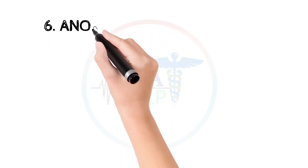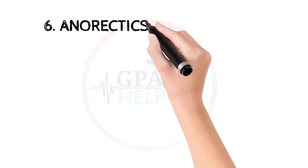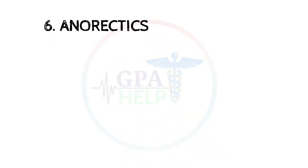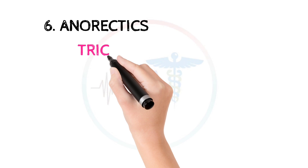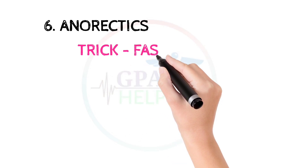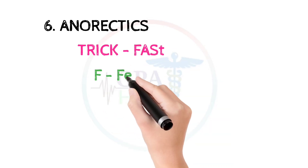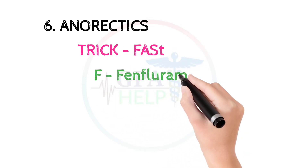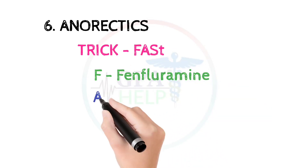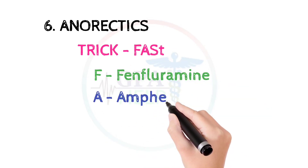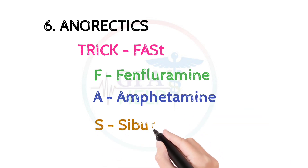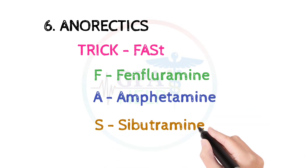The sixth class is anorectics. These drugs can be learned by the trick: FAST. F stands for fenfluramine, A stands for amphetamine, and S stands for sibutramine.